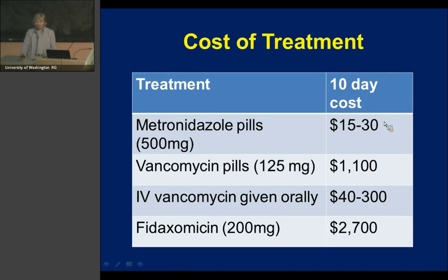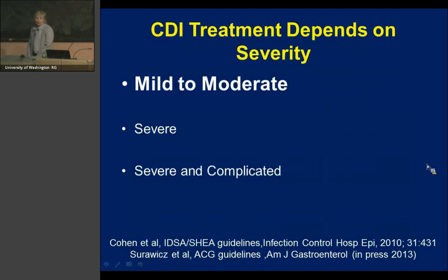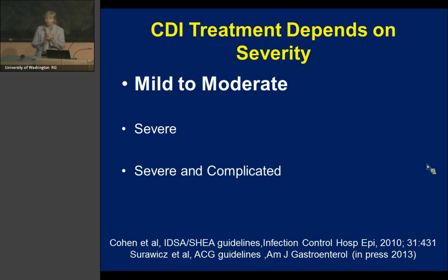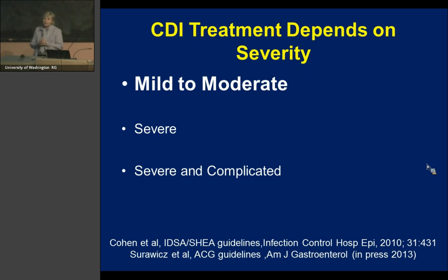Treatment should be based on how sick the patient is. The three categories are mild-to-moderate, severe, and severe and complicated. Mild-to-moderate is defined as the absence of criteria for severe disease, which I haven't yet shown you. The ID Society's guidelines, published a couple of years ago, used this classification system.